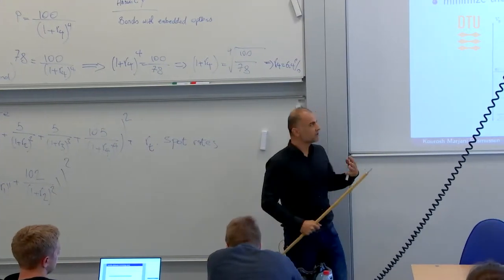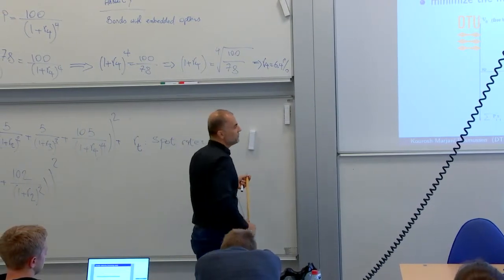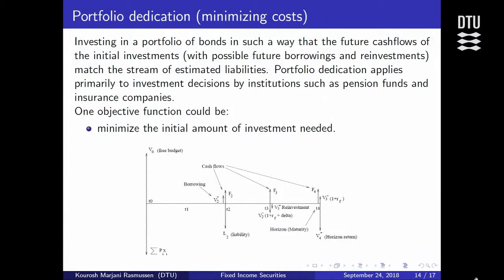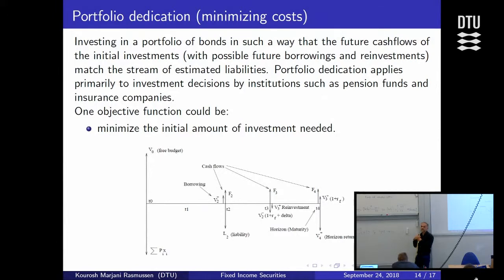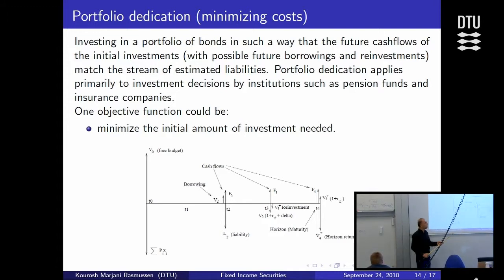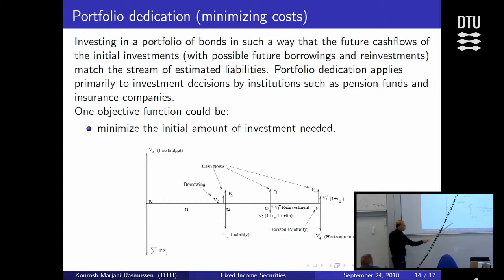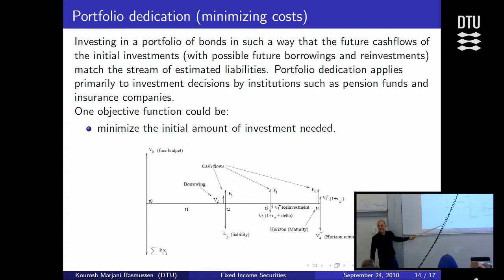At any given year there is money coming in and money going out. As the asset-liability manager, you have to ensure that, for the pool of money you have, you can buy bonds that will pay the liabilities. Here I have one liability L₂ at time two. The sum of price p times x — bond price times how many bonds I buy — equals my budget. I want to minimize that budget, buying as few bonds as possible.